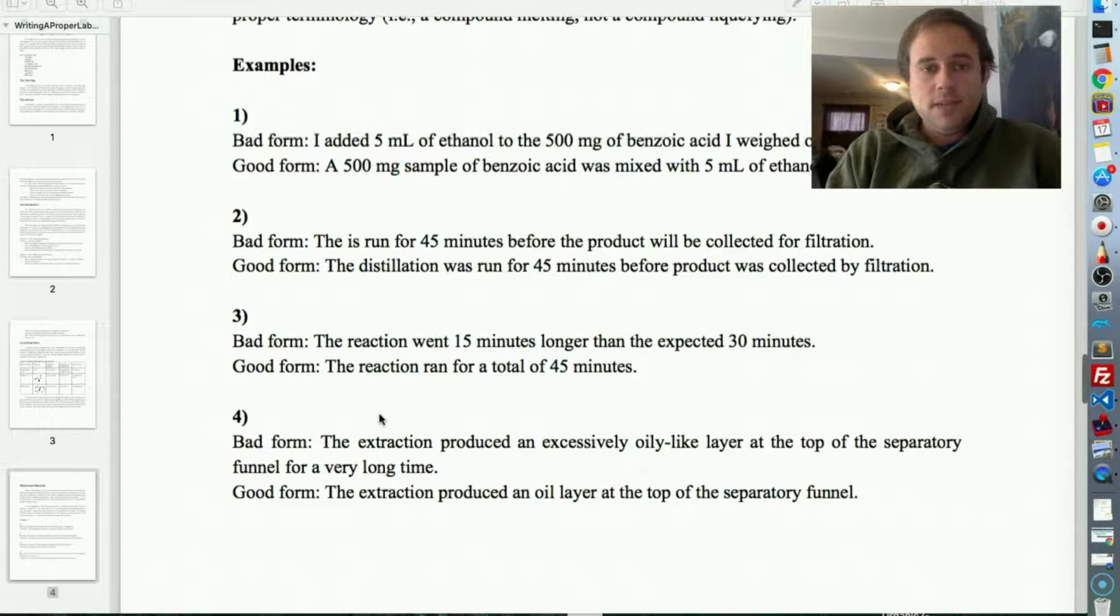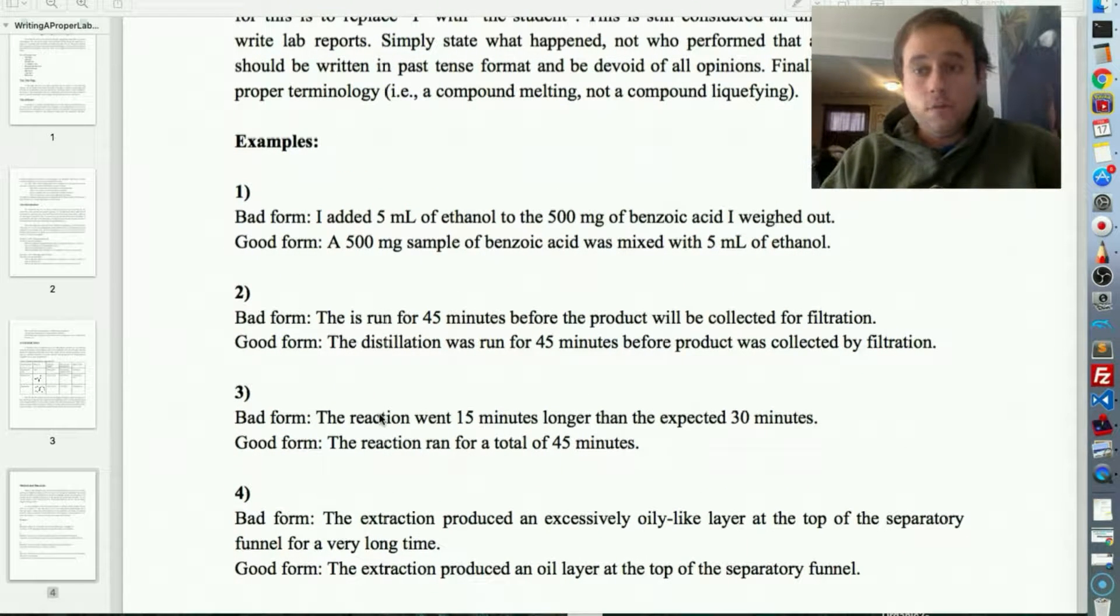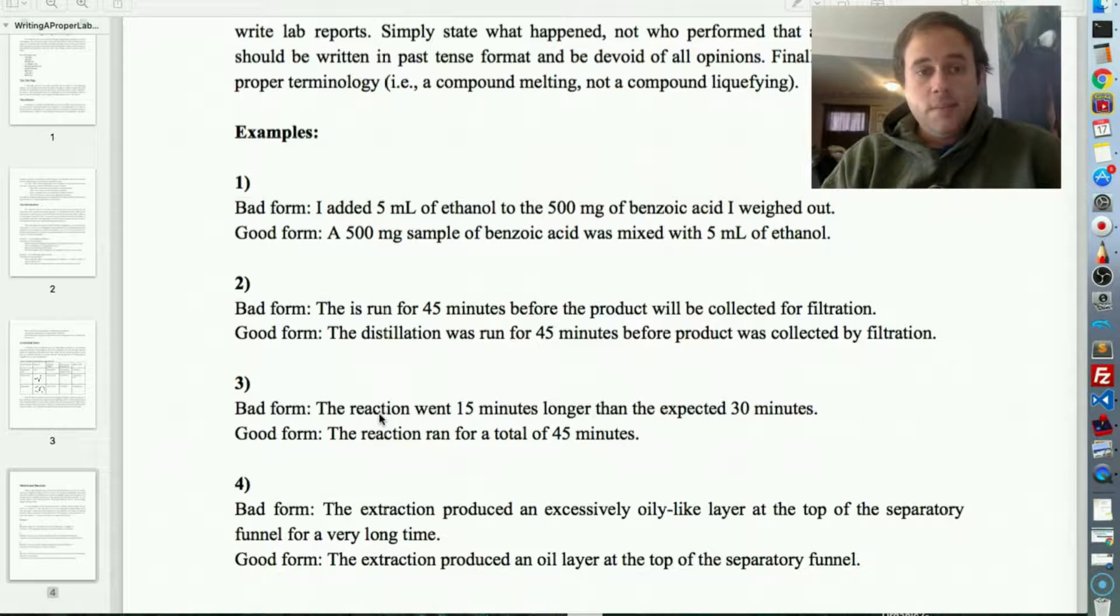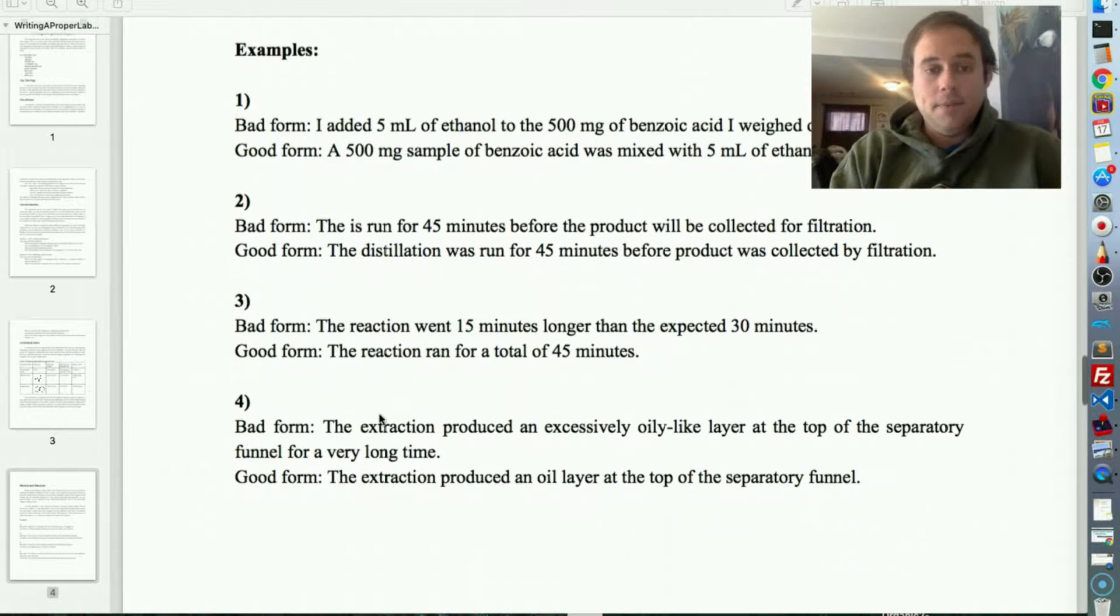So, examples. I gave a couple of examples here with a bad form and a good form when you're trying to do this. So, for the examples, let's take a look at some of these. Number one, it would be bad form to say, I added 5 milliliters of ethanol to the 500 milligrams of benzoic acid I weighed out. Good form would be to state, a 500 milligram sample of benzoic acid was mixed with 5 milliliters of ethanol.